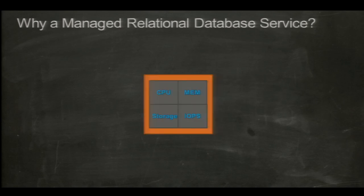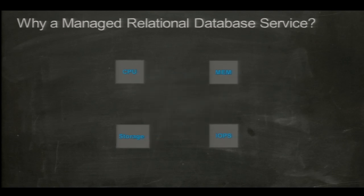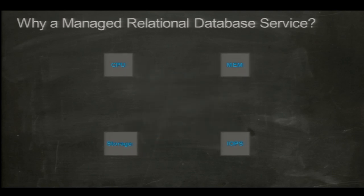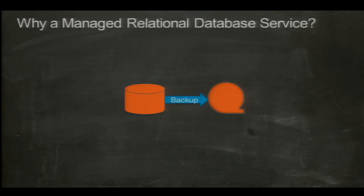One of the problems is that when you used to buy a server, you got the CPU, memory, storage, and IOPS all bundled together with a three-year commitment. Now with AWS and RDS, you get to split those apart and scale them independently. So if you want more CPU, less IOPS, more storage — whatever you need — you can do that. It's really nice and flexible.